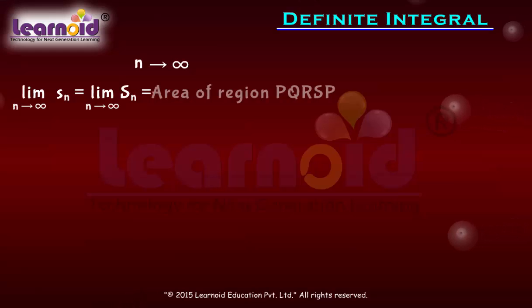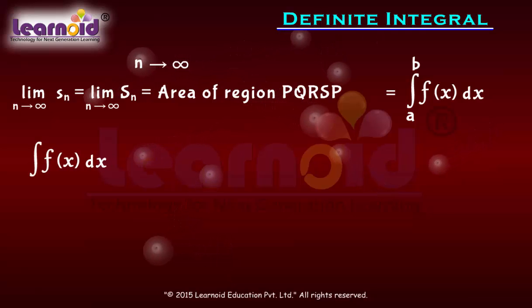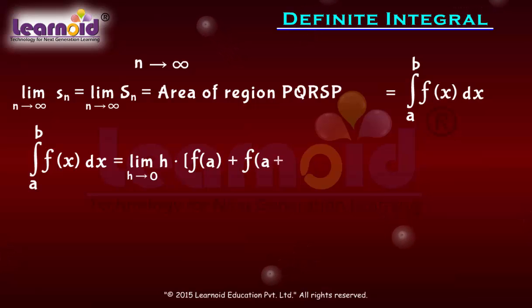We can rewrite it as: integral of f(x) dx from a to b equals limit as h tends to 0 of h times [f(a) + f(a+h) + ... + f(a+(n-1)h)].